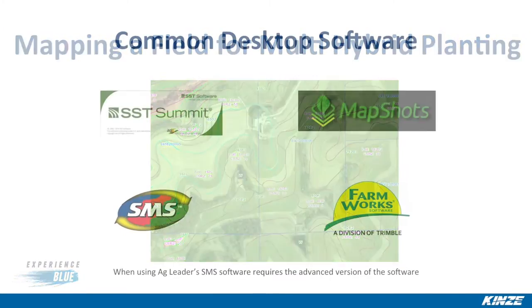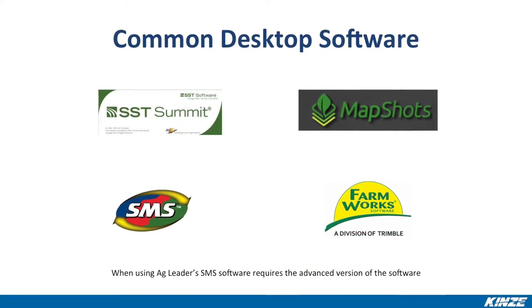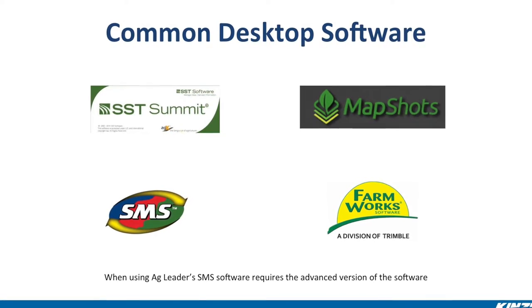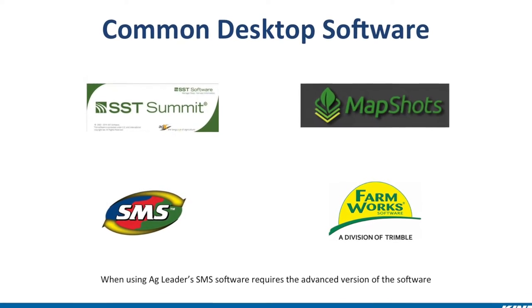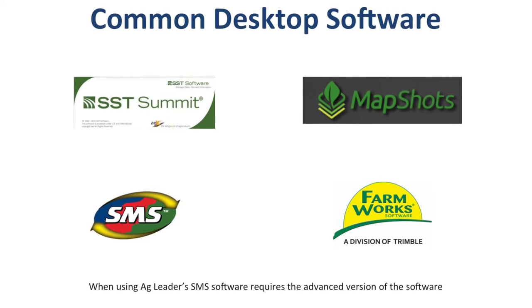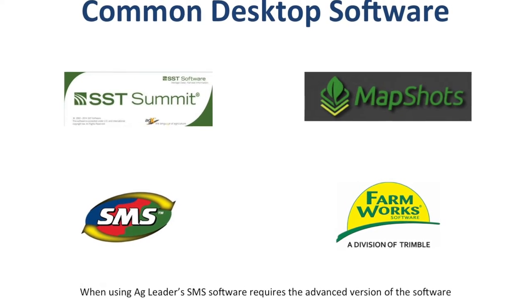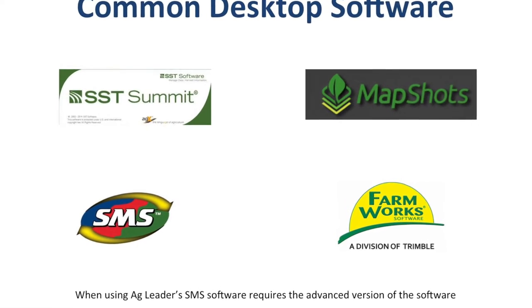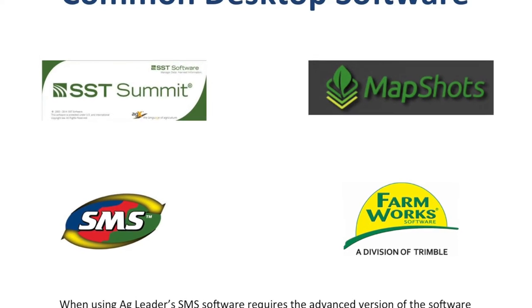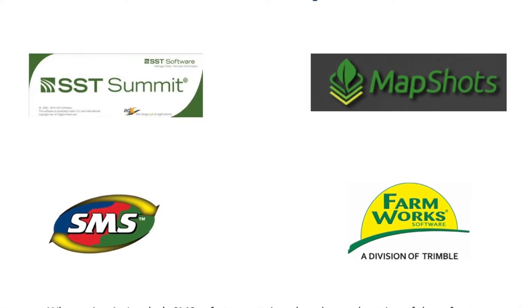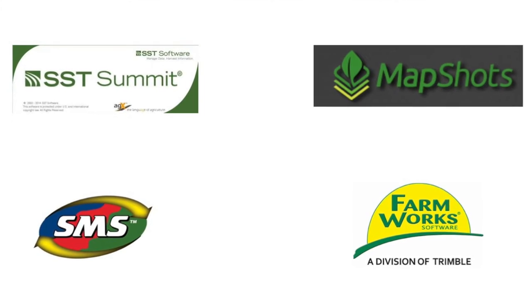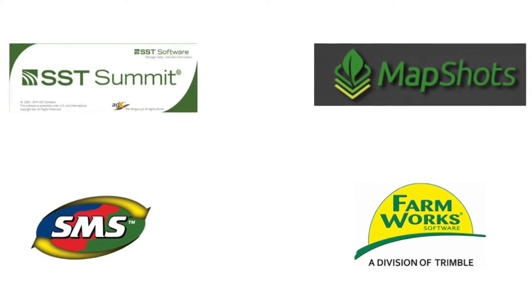To be able to create prescriptions for your field, desktop software is required. Four of the most common programs are seen on your screen. They include SST, MapShots, SMS Advanced, and Farmworks. Other options are available for creating general prescriptions. For the multi-hybrid examples in this tutorial, AgLeader's SMS Advanced software was used.